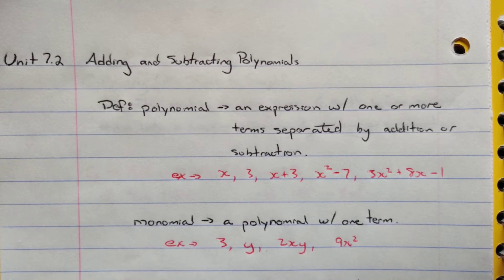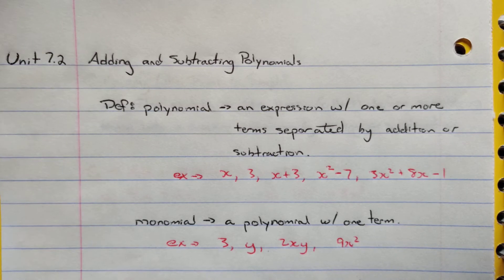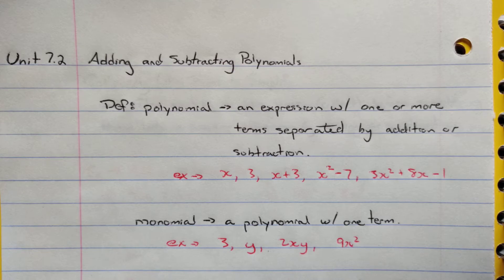A polynomial is another way of looking at algebraic expressions. For example: x, 3x plus 3, x squared minus 7, and 3x squared plus 8x minus 1 are all types of polynomials.